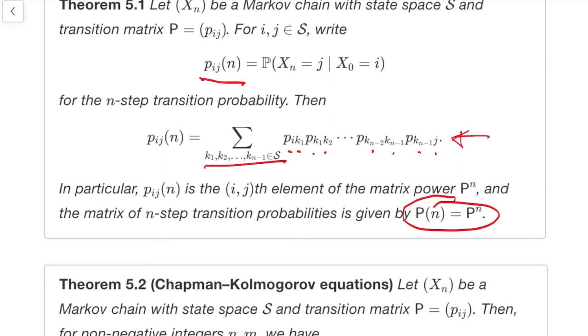So this has given us two ways to find n-step transition probabilities. If you just want to find one n-step transition probability, then this way is the easiest one, which is sum the probabilities of all the length n-paths between i and j.